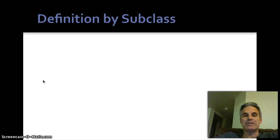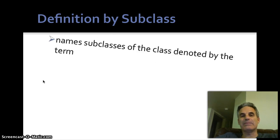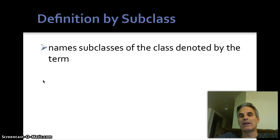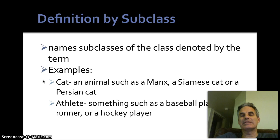Next, we're going to look at definition by subclass. With subclass, rather than talking about individual examples, we're talking about types or classes within the class. So cat is an animal such as a Manx, a Siamese cat, or a Persian cat. These are types of cats, not individual cats.